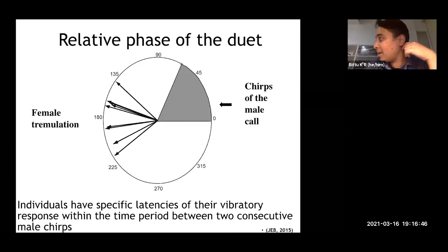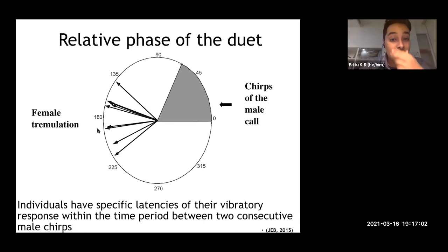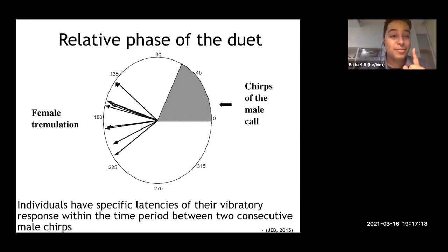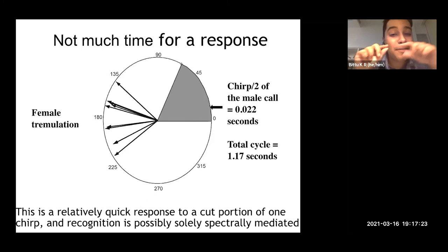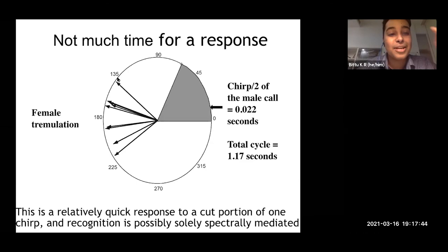The males are able to respond to these vibratory signals and move towards the source, but they'll only do so if it arrives in response to their own call — which also provides interesting insight into the possible circuit mediating these responses. We're now also looking at the relative phase of the duet: between male calls — if you represent the time between male calls as one full cycle — a given female has extremely high fidelity in the timing of her responses, but each female has slightly different timing. A given female responds at a very specific time after the onset of the call.